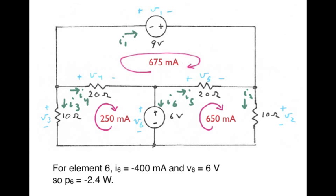Mission accomplished for element 4. Let's find power for another element, say element 6. The current I6, again shown by a green reference arrow, is 250 milliamps minus 650 milliamps or minus 400 milliamps. The voltage V sub 6 is constrained to be 6 volts. So power for element 6 equals current times voltage, or minus 2.4 watts. The minus sign means that source is delivering 2.4 watts.